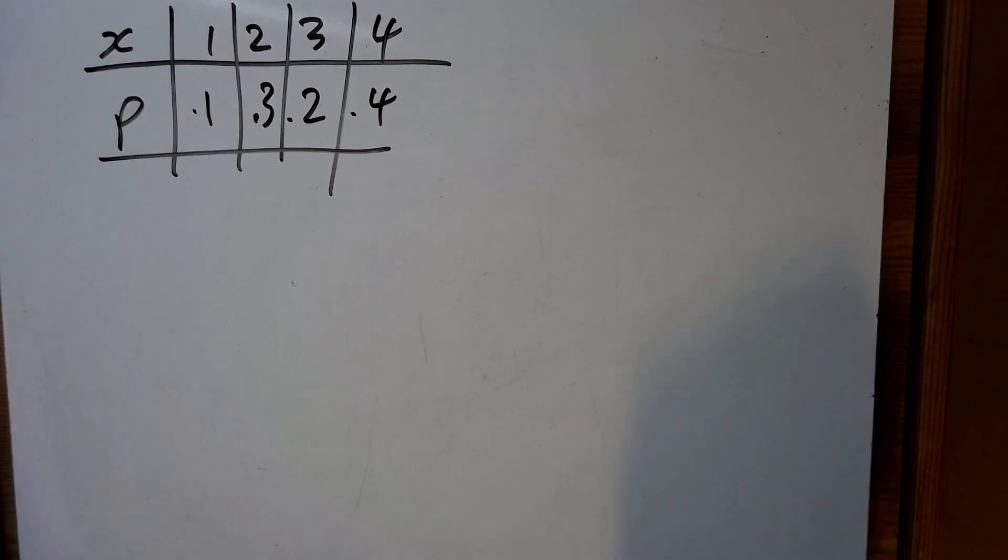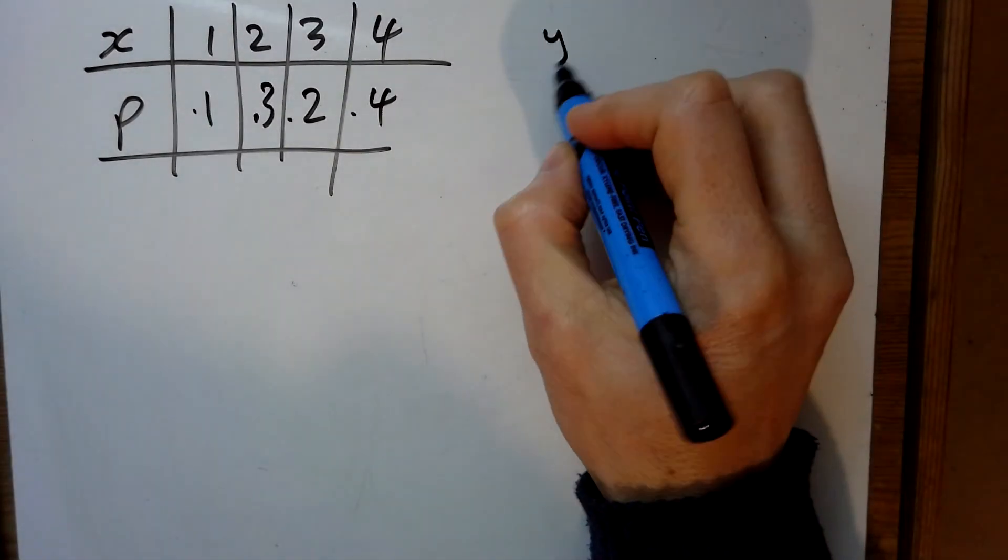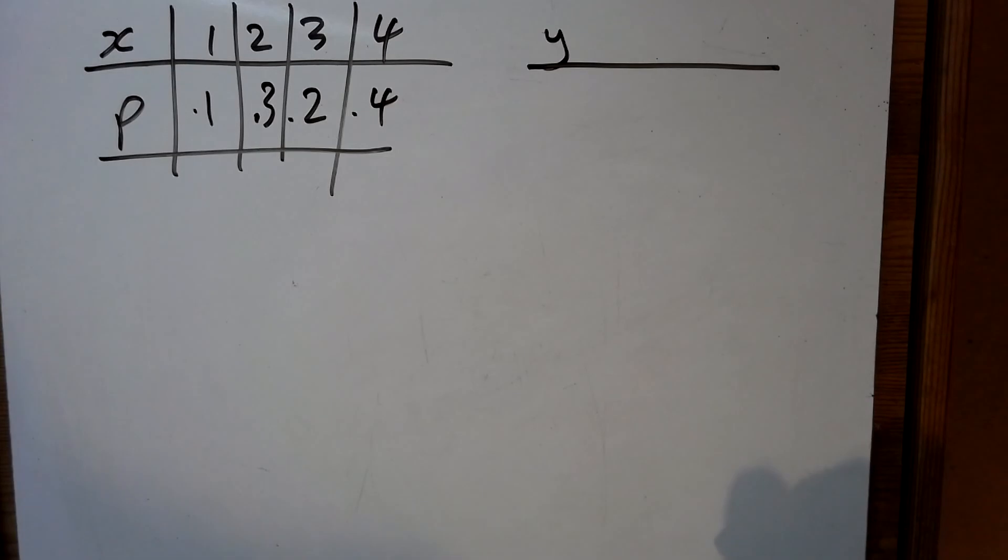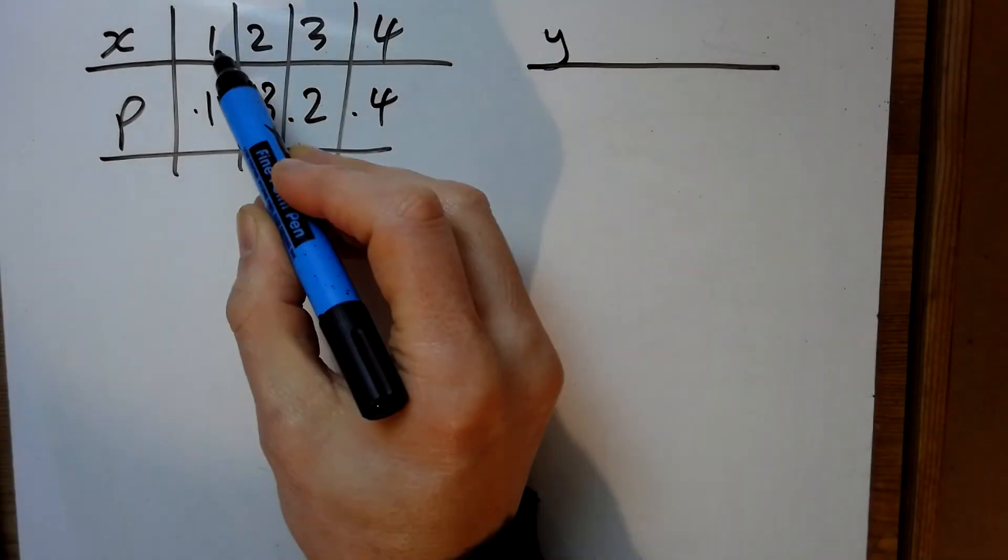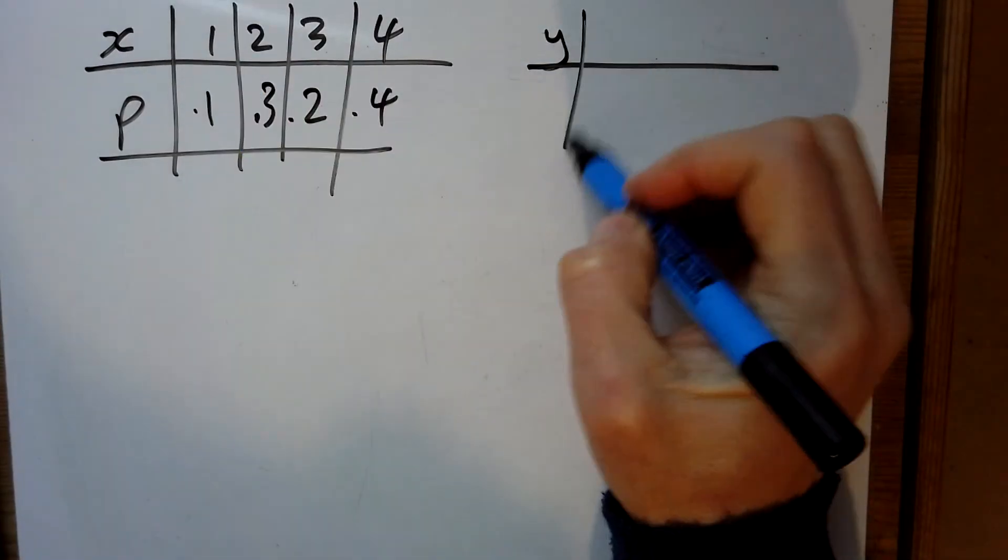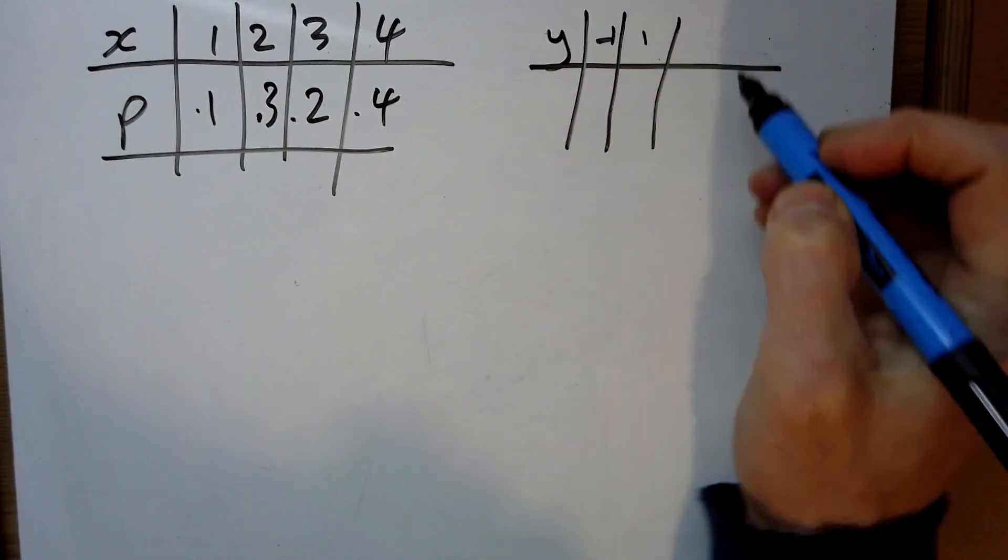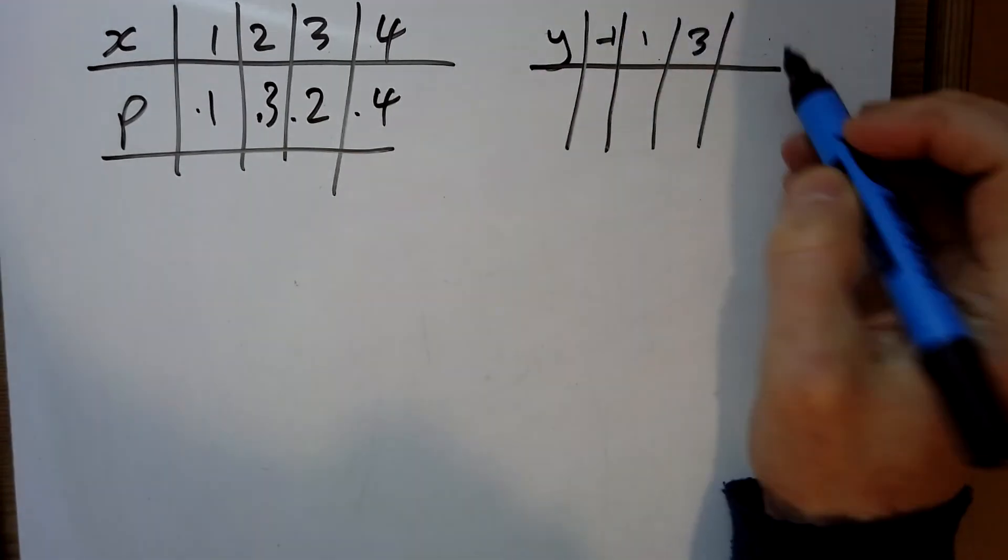Question 1 of exercise 1c, we're going to get a new distribution for y and it says that y is 2x take away 3. 2 of these take away 3, so that's minus 1, then we've got 1 and then 3 and then 5.